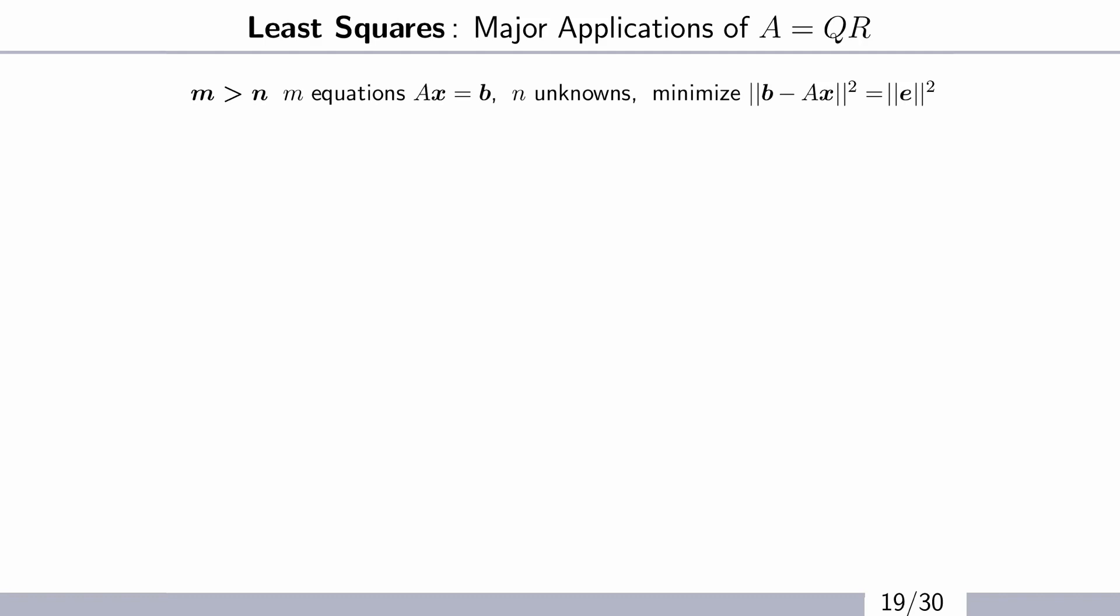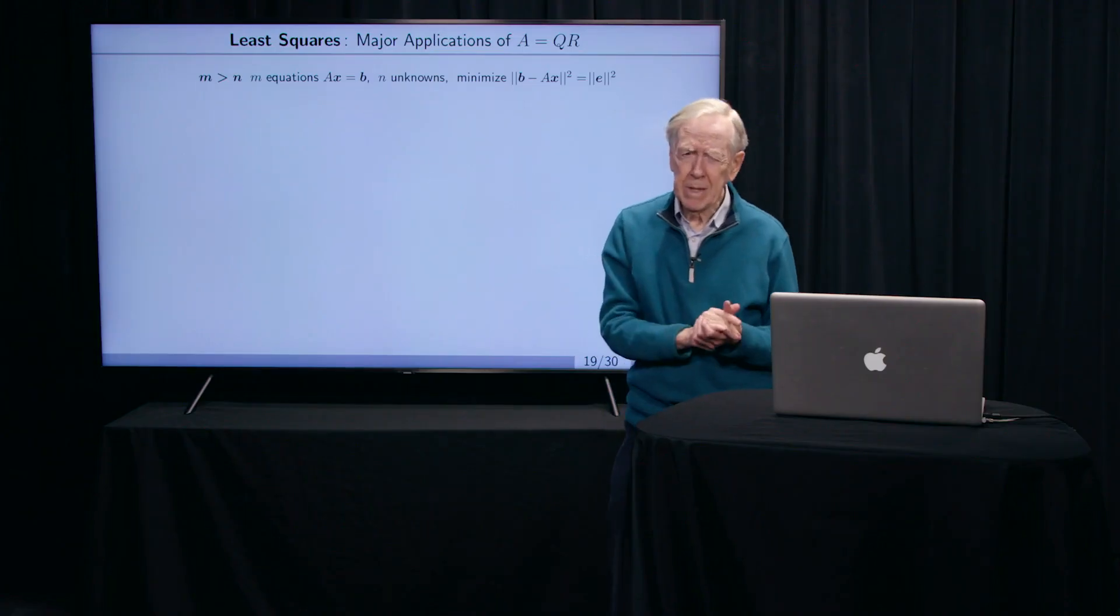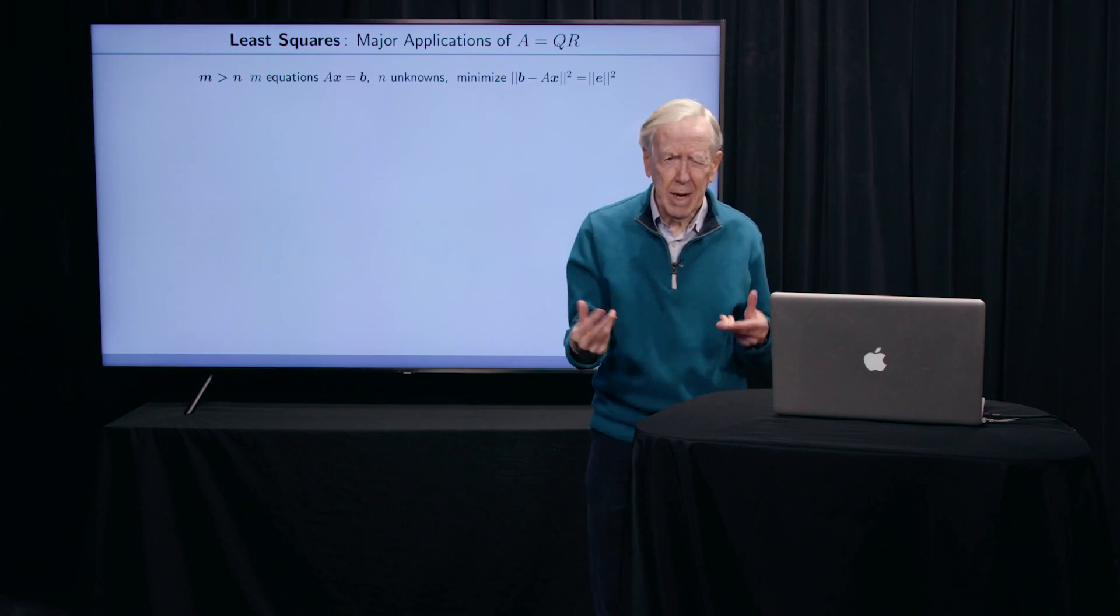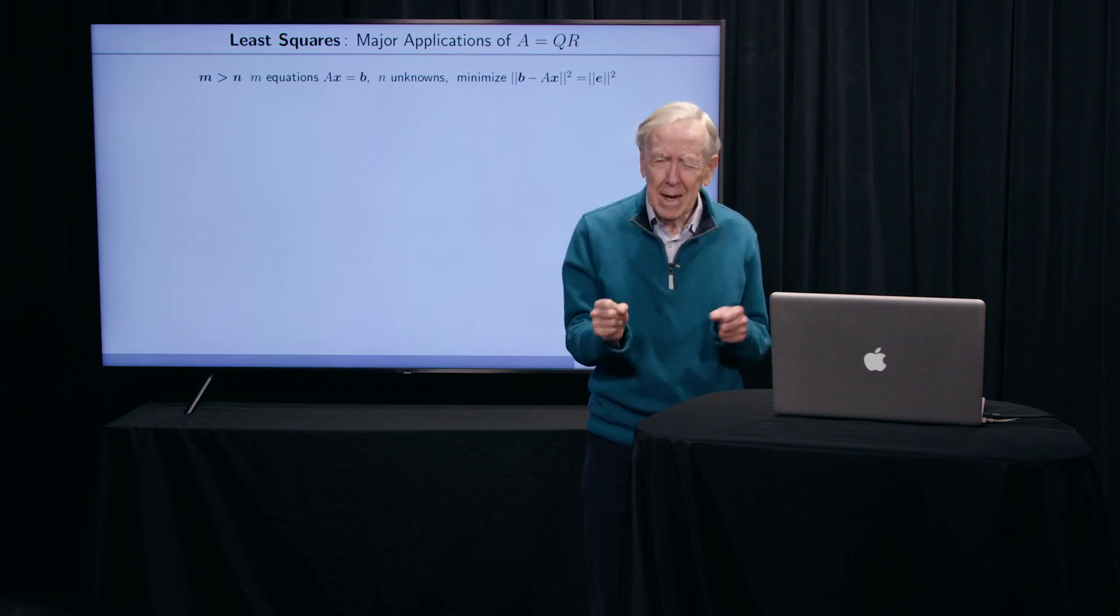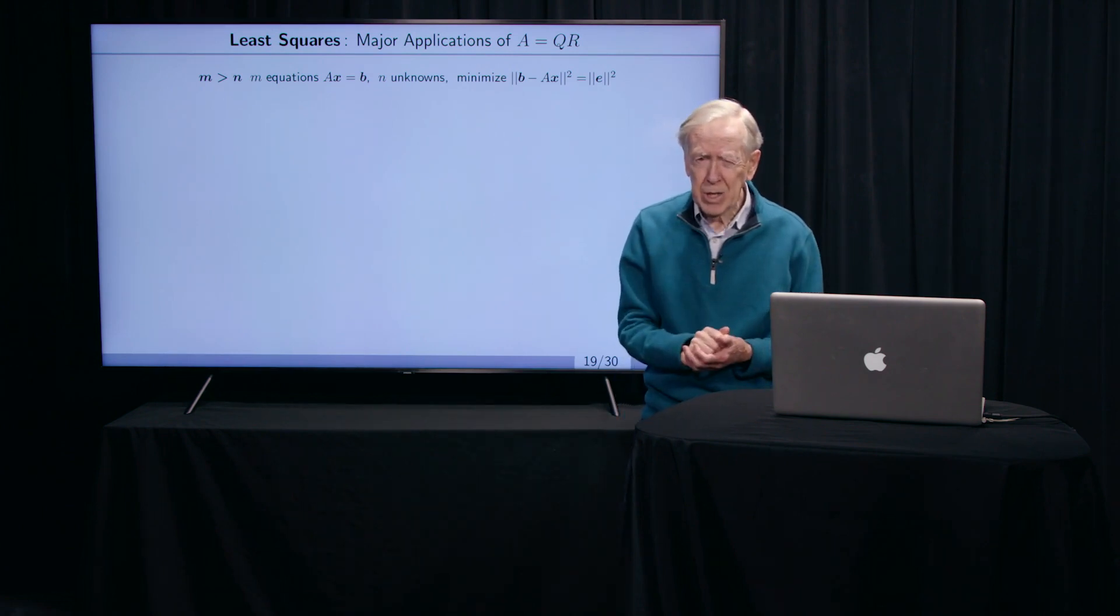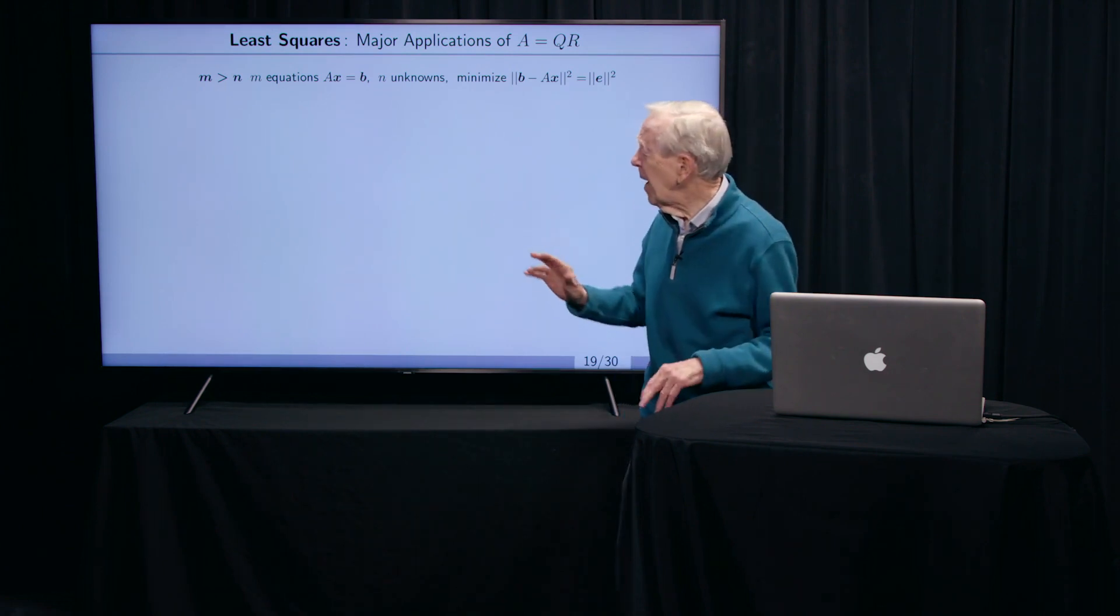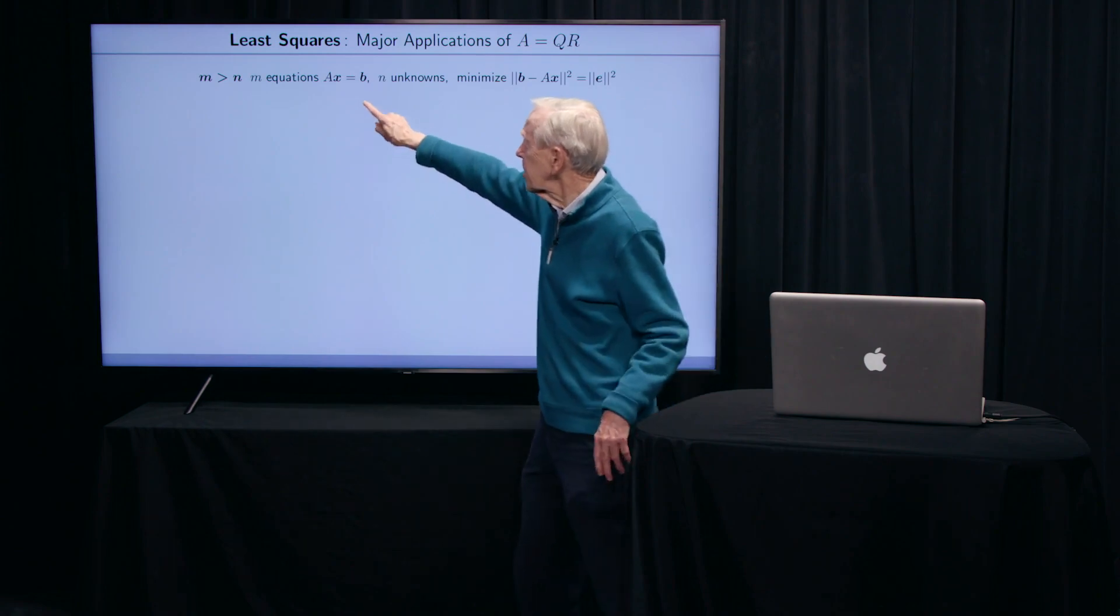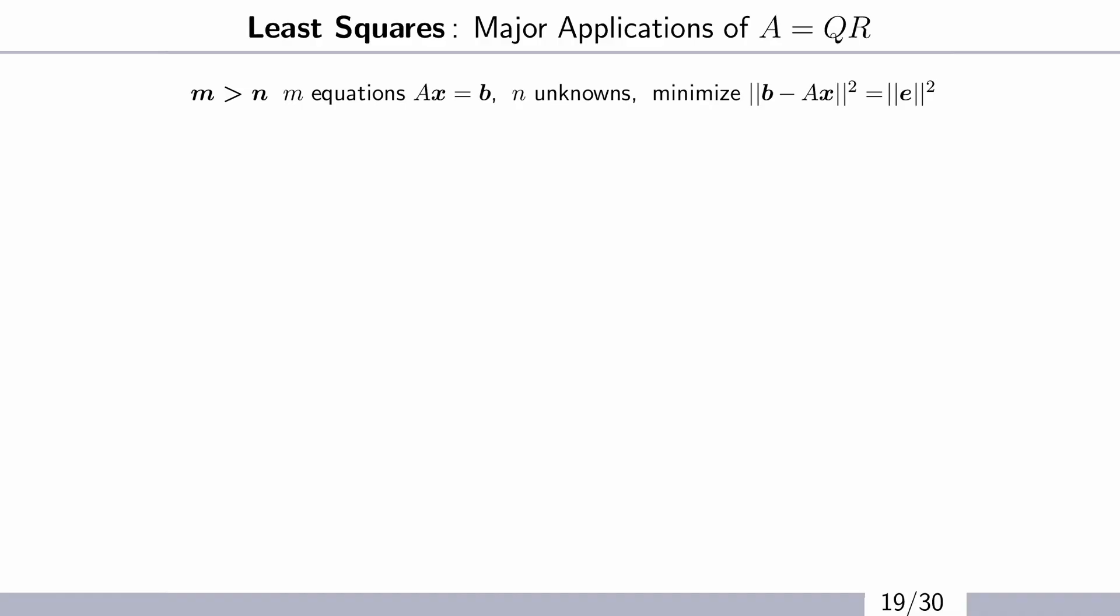So suppose we have too many equations. That often happens. If you take too many measurements, you want to get something, you want to get an exact x. So you do more and more measurements B. You're placing more and more conditions on x, and you're not going to find an exact x because you've got too many equations. M is bigger than n. We might have 2,000 measurements, say, from medical things or from satellites.